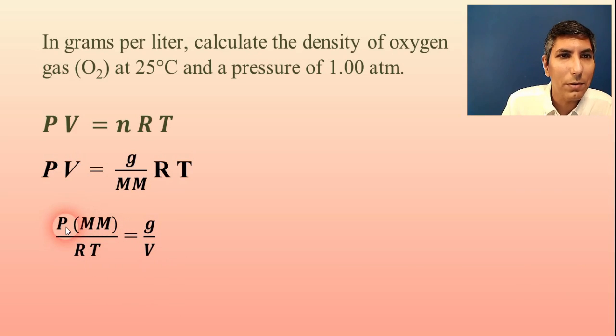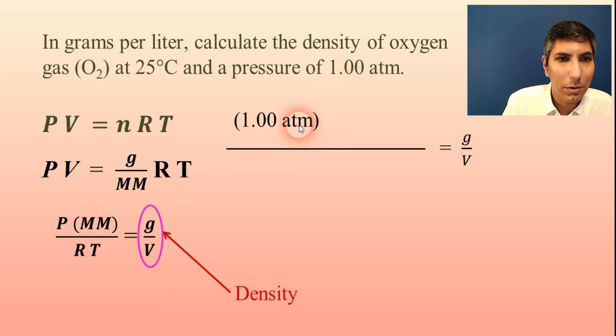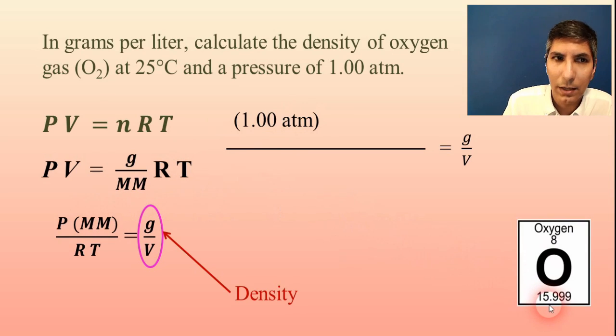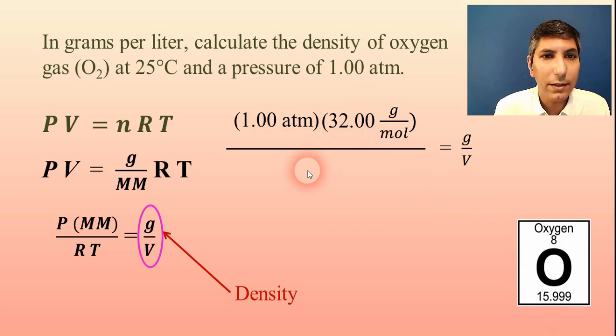So the pressure, well, it's 1.00 atmosphere. And so I plug that in there. And the molar mass, well, I need the periodic table again for O2. It's about 32.00 grams per mole. So I'm going to plug that in for my molar mass.